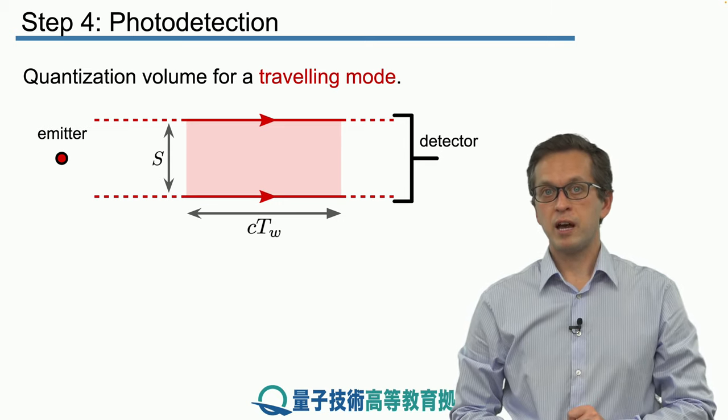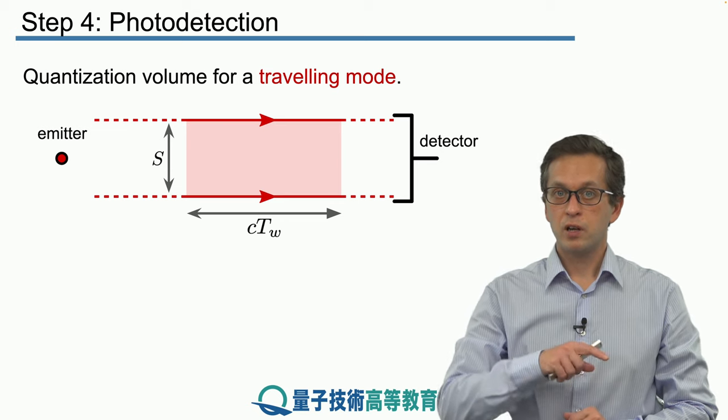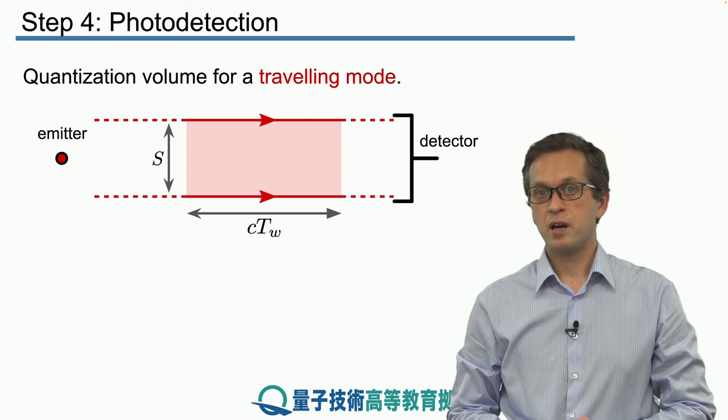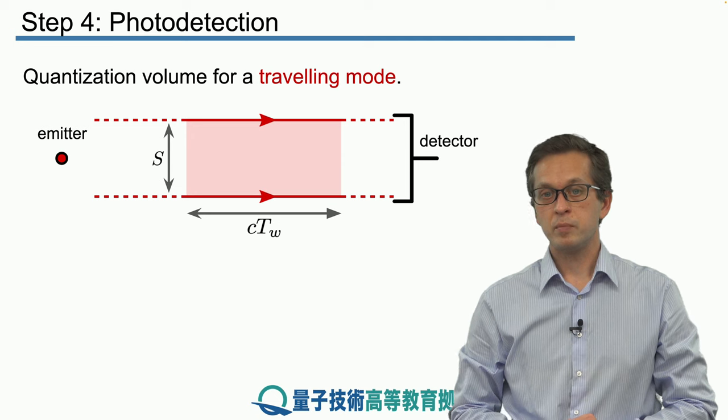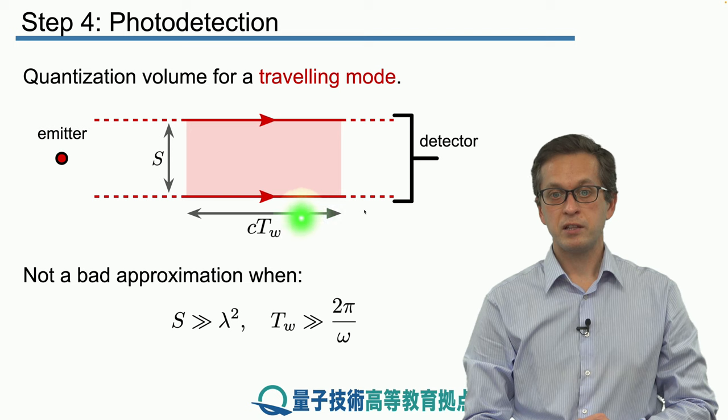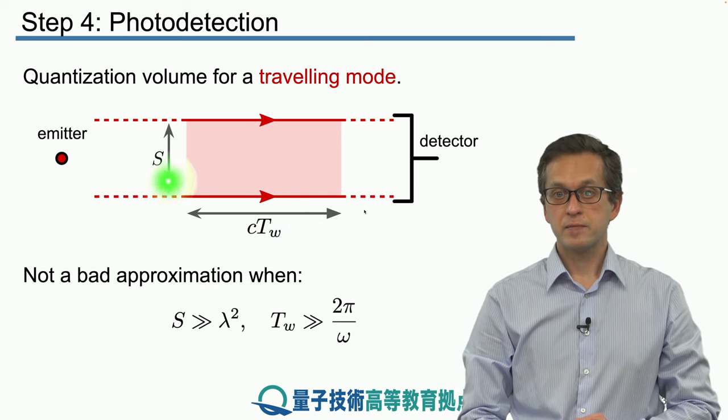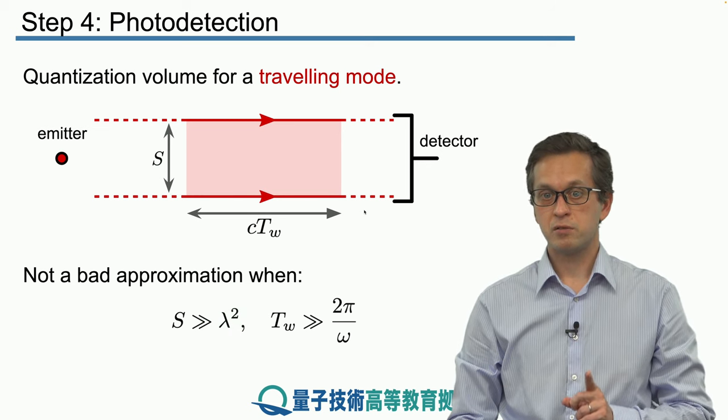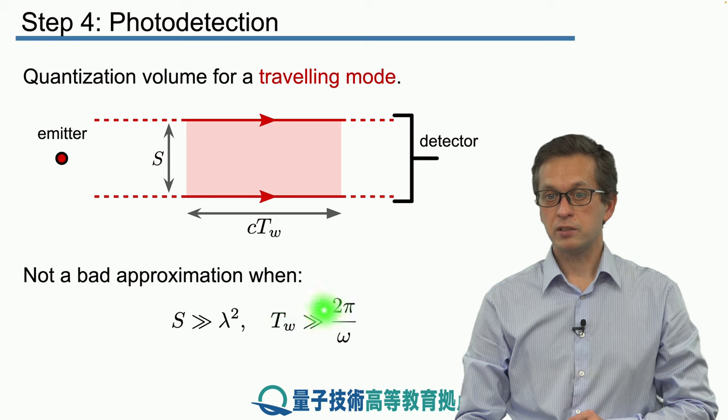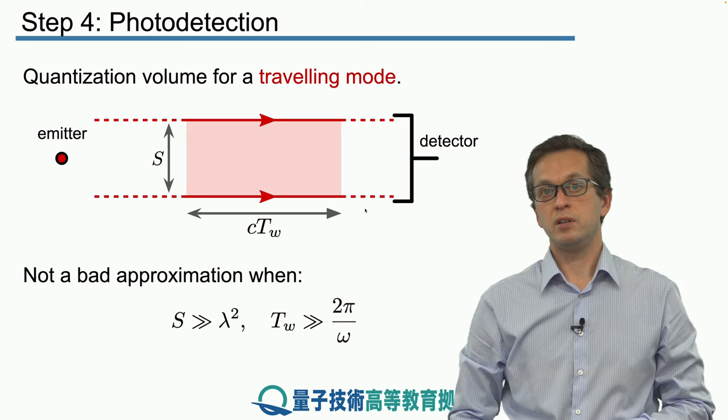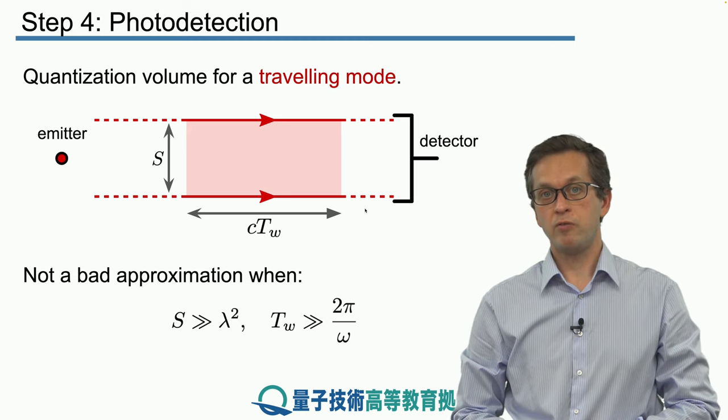This seems like a not very accurate model, particularly considering when we saw the past oscillations inside the wave packet of a realistic photon. But it turns out that in many scenarios, this model is actually quite accurate, given that we satisfy the following conditions. S, the width of our beam, has to be much larger than the wavelength of the radiation squared. And also, the duration of the wave packet must be much larger than the time period given by the frequency of our radiation.